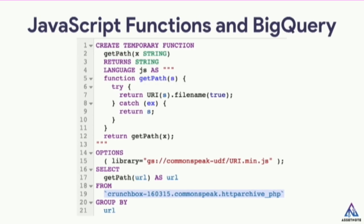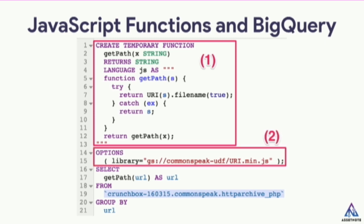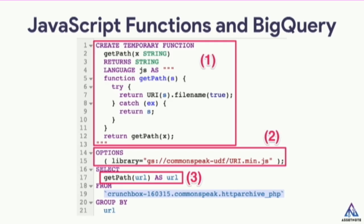You can also use JavaScript functions in BigQuery — you can create a temporary function. Basically, all this is doing is parsing a URI to get the path, using a library hosted on Google Storage. It's a simple library for parsing URIs that Shubs wrote — it's publicly accessible, so you could use it in your own BigQuery queries as well. And it's just pulling out the URL and grouping by the URL.